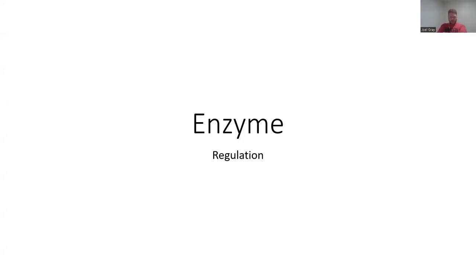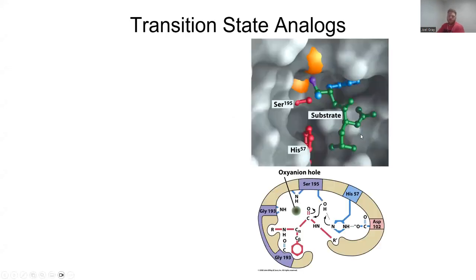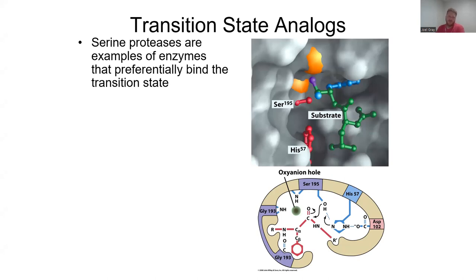So here we're going to wrap up enzymes and we're going to venture into enzyme regulation. One target for altering enzyme activity is to develop something that's a transition state analog. Serine proteases are examples of enzymes that preferentially bind to the transition state. There's this state of any molecule that goes from its initial state to its final state, the reactants to the product.